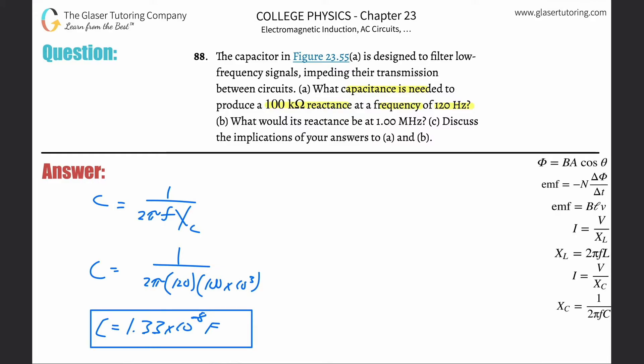Letter B says what would its reactance be at 1 megahertz. We need to find the capacitive reactance at this frequency. We're going to take the formula again: this equals 1 divided by 2π frequency times the capacitance.